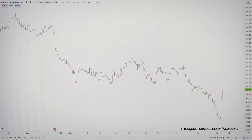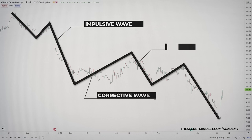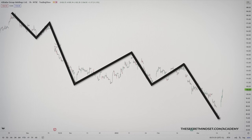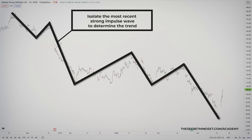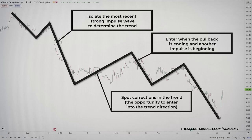Market trends have a repeating pattern of a strong impulsive wave in the trending direction, then a smaller pullback against the impulsive wave, followed by another impulsive wave. Your job is to isolate the most recent strong impulsive wave to determine the trend. You need to spot corrections in the trend because these are the pullbacks that are going to provide an opportunity to enter into the trend direction. You want to pull the trigger on a trade when there is enough evidence to suggest the pullback is ending and another impulse is beginning.